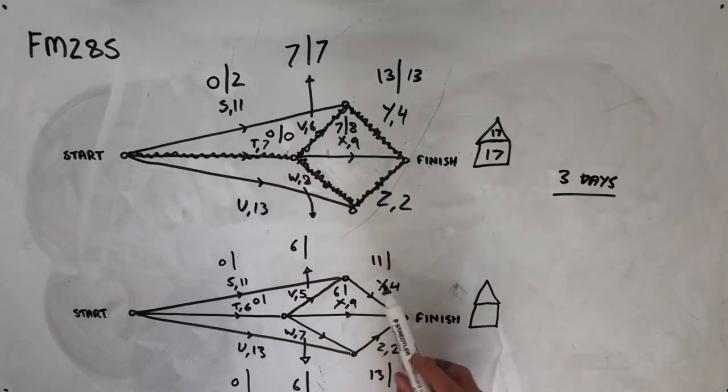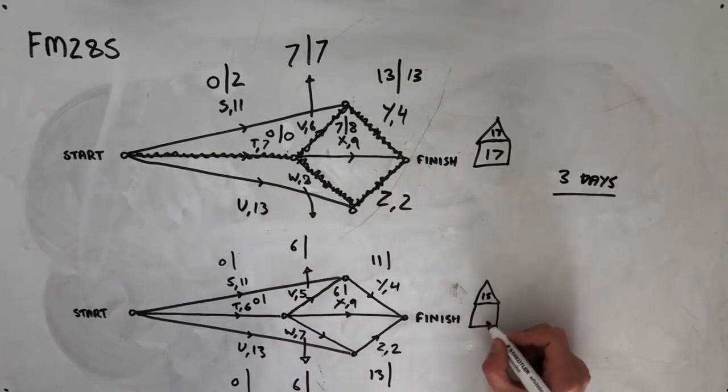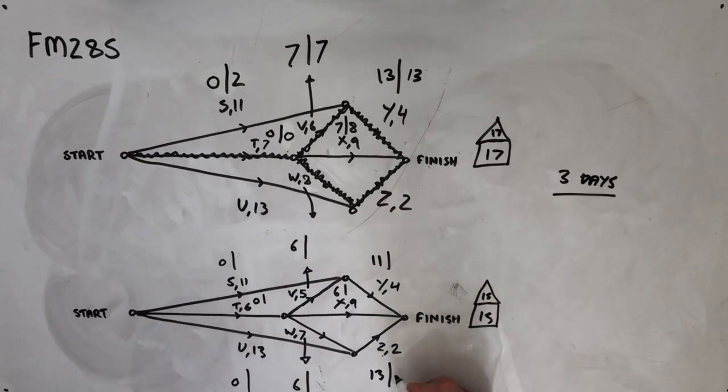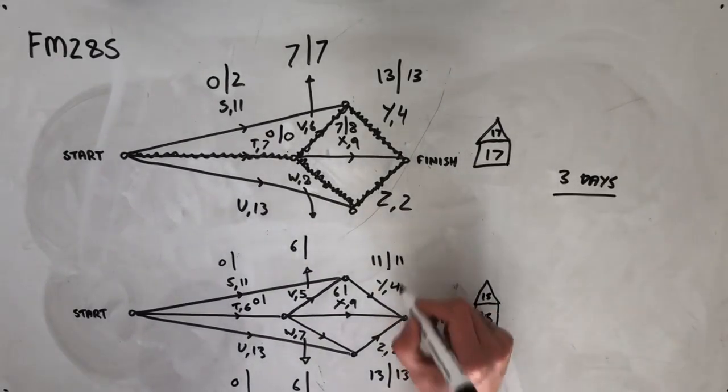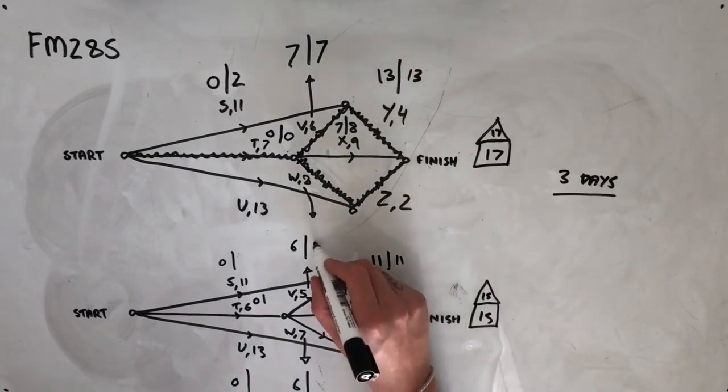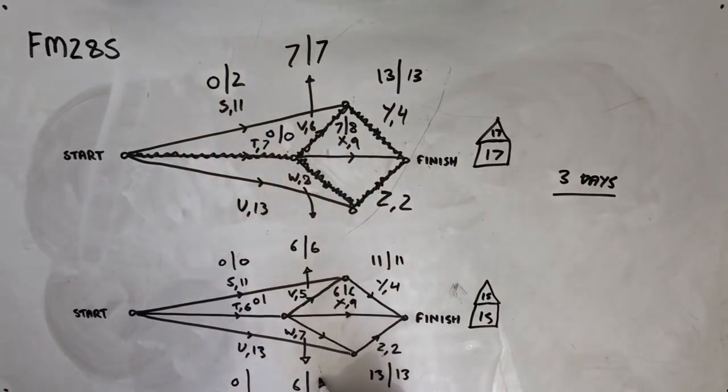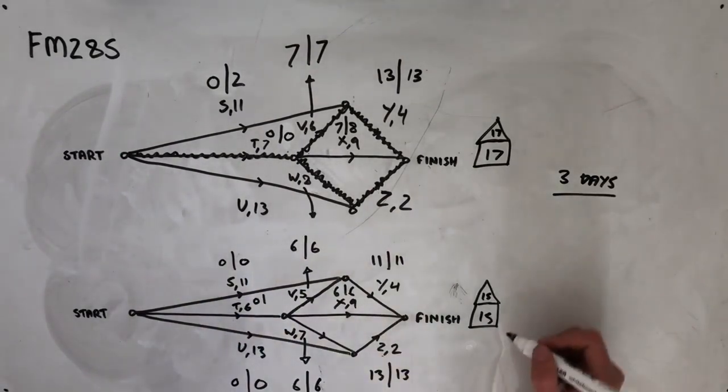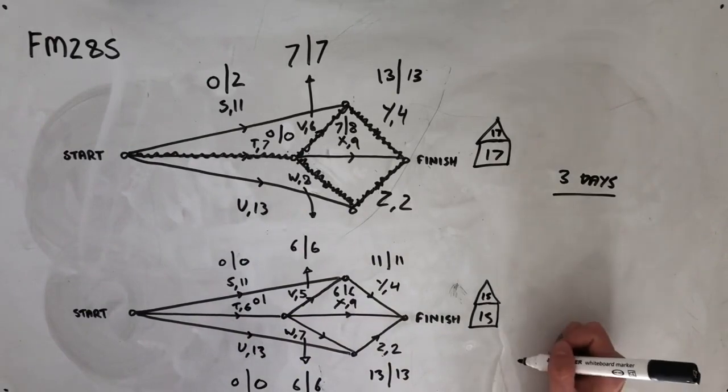And looking at activity Y, earlier starting time of 11, it's going to take four days, also 15 days to completion. And activity Z, early starting time of 13, it's going to take two days, also 15. So all of these paths also have 15 in it. And if we work them all backwards, what you'll see is that now every activity is actually along the critical path. Every activity has been brought to that critical path. It's going to take us 15 days to complete it.